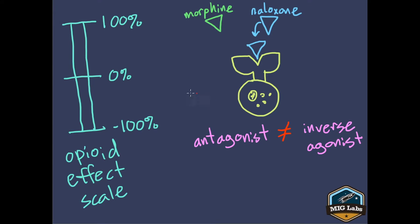Let's say I'm in a car accident, I break my leg, and the paramedics decide to give me some morphine, bringing me up on that scale. There is a point where you can have too much opioid, depending on the patient, their metabolism, and other medications. If the paramedic accidentally gives too much morphine and I pass that threshold, my respiratory depression becomes too severe, I become hypoxic, and we're in a legitimate medical emergency where I might stop breathing and die.